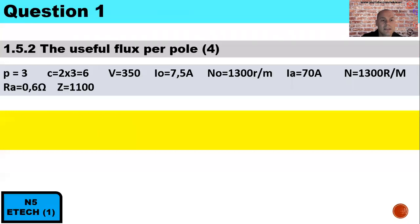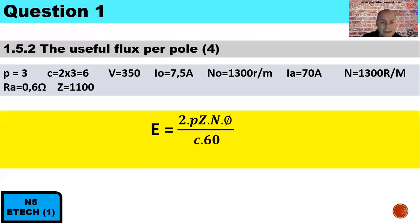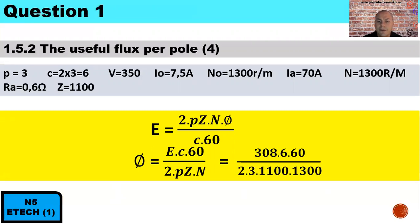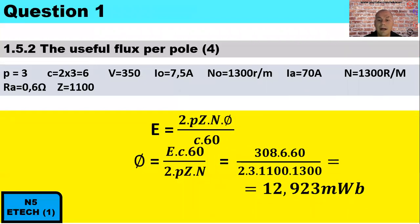Question 1.5.2: Calculate the useful flux per pole. Using the EMF equation rearranged, flux per pole = (generated EMF × C × 60) ÷ (2 × P × Z × N). That is (308 × 6 × 60) ÷ (2 × 3 × 1,100 × 1,300). Therefore, the flux per pole is 12.923 mWb (milliwebers).